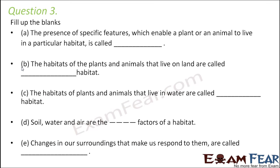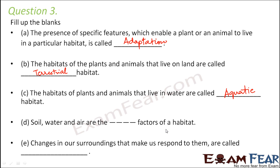Question number three: fill in the blanks. The presence of specific features which enable a plant or animal to live in a particular habitat is called adaptation — like how cactus plants have spines as an adaptation to survive in a desert. The habitats of plants and animals that live on land are called terrestrial habitats. The habitats of plants and animals that live in water are called aquatic habitats. Soil, water, and air are the abiotic factors of a habitat. Every habitat has biotic and abiotic components — since soil, water, and air are non-living, they are abiotic components. Changes in our surroundings that make us respond to them are called stimuli.